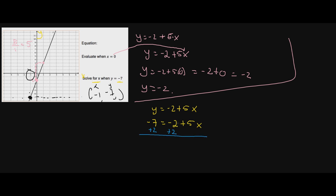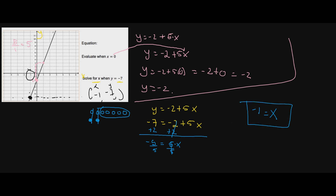We have negative seven equals negative two plus five x. We want to undo the subtraction — the opposite of negative two is to add two to both sides. Negative seven plus two: think of seven holes in the sand with only two to fill in — you're left with five unfilled holes, so negative five. Negative five equals five x. Dividing both sides by five, the fives cancel and x equals negative five divided by five, which is negative one — exactly what the graph showed.